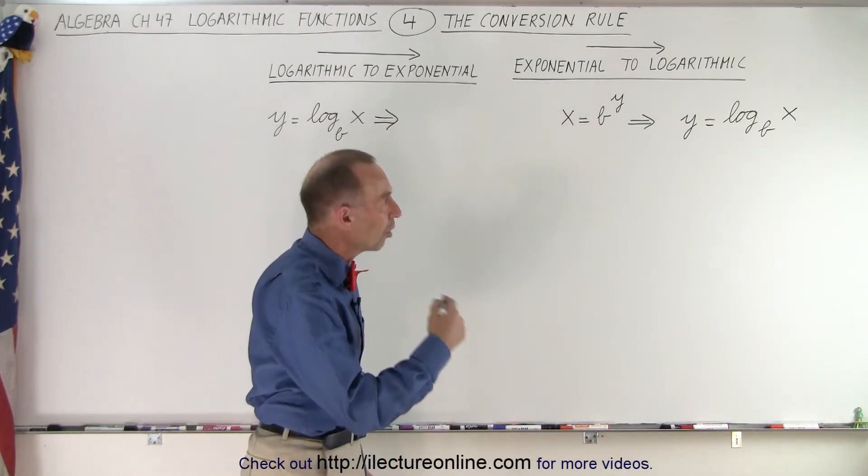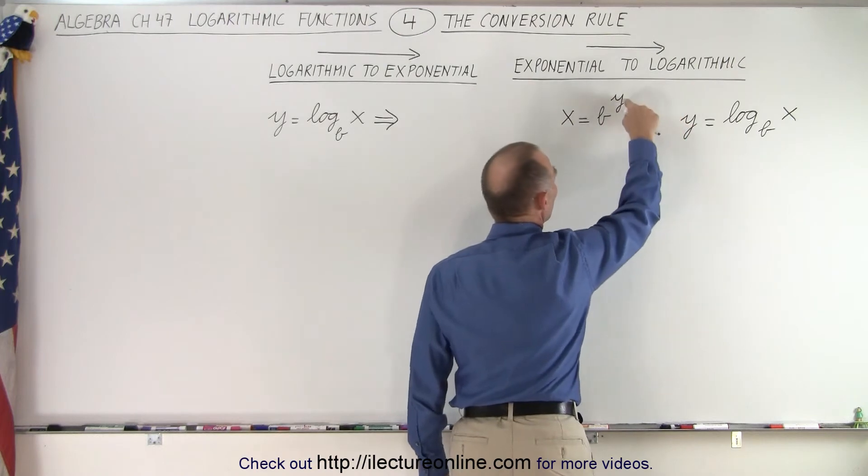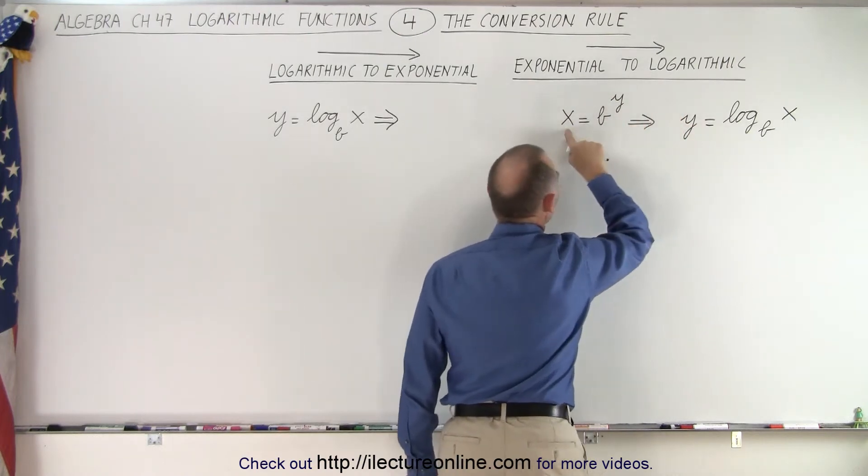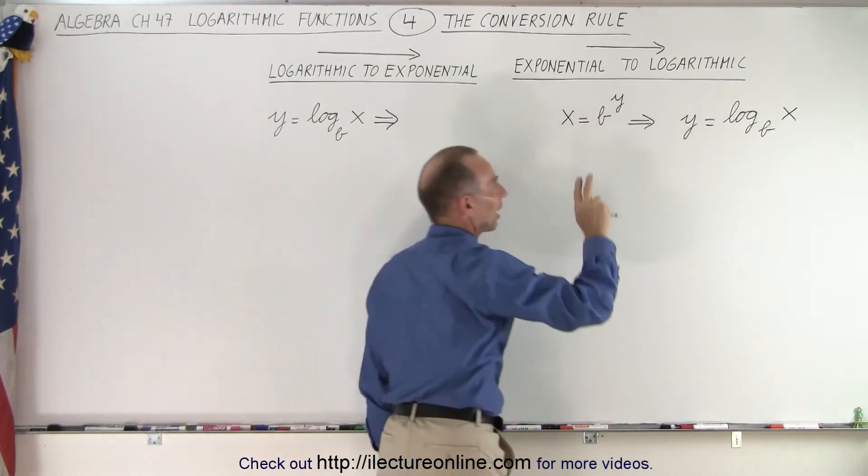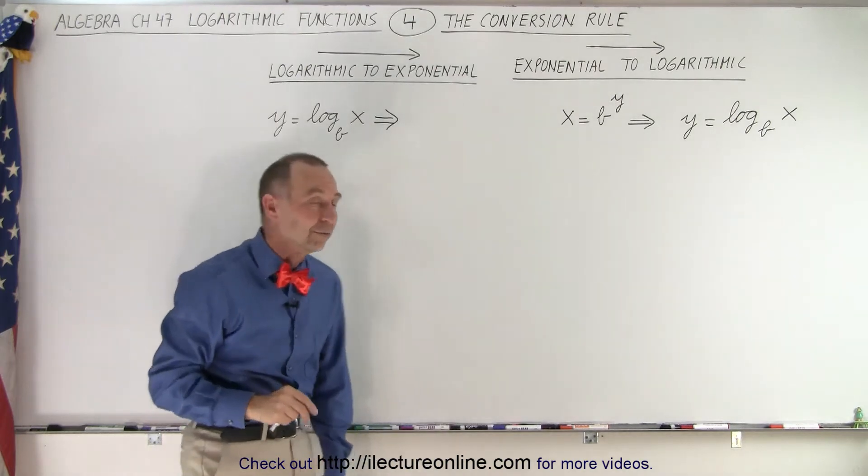So we have y equals the log base b of x because y is the exponent, b is the base, and then x is the number on the left side of the equal sign which we will now take the log of.